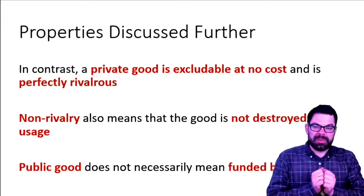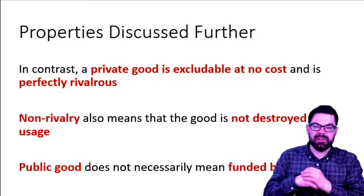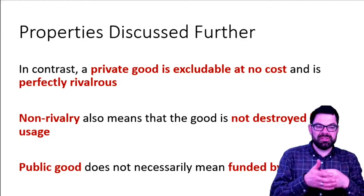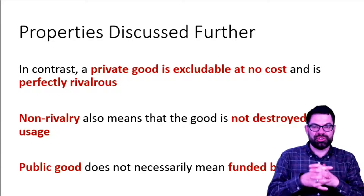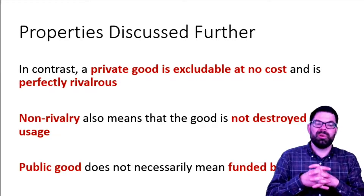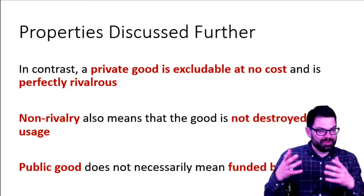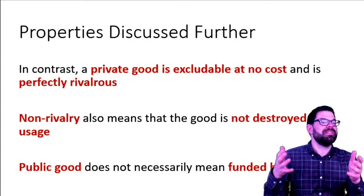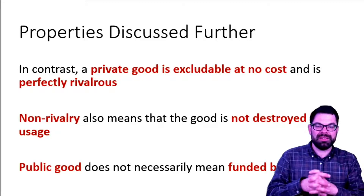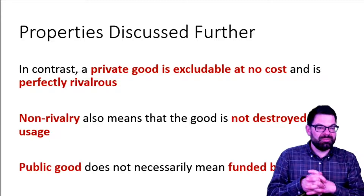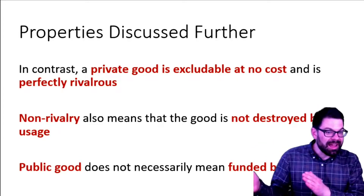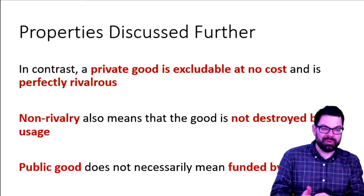Let's think further about what those properties mean. When we look at a private good — such as a car, a house, or pretty much anything you can purchase in a shop — it is typically excludable at little to no cost. If I buy a house, I can close the door and keep people out. It's also perfectly rivalrous: if I buy a house, you can't have it. You can buy a similar house, but not the same one I've bought unless I sell it to you.